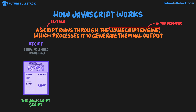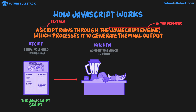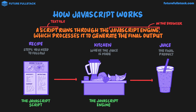It's the text file which has all the code. For the juice bar, this recipe is executed inside the kitchen — it's where the juice is made. In terms of JavaScript, the JavaScript script is executed inside the JavaScript engine, which is a part of the browser. From the kitchen, we get our complete juice — it's the final product. And in terms of JavaScript, this is now our webpage outcome — that is, the content we want to display or update.